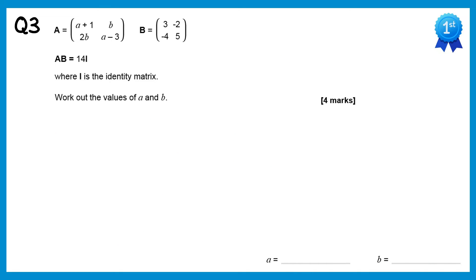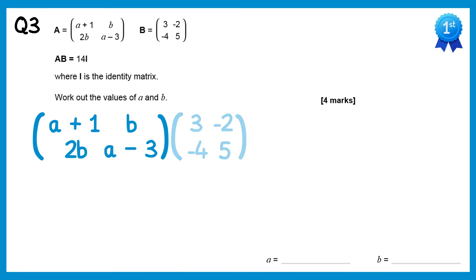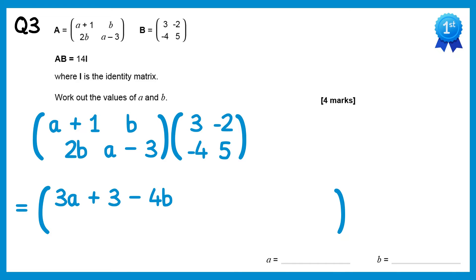In this question we're told that AB equals 14I. Let's work out AB. We'll do a plus 1, b and 3, negative 4: a plus 1 times 3 gives 3a plus 3, and b times negative 4 is negative 4b, so we've got 3a plus 3, take 4b. Then a plus 1, b with negative 2, 5: a plus 1 times negative 2 is negative 2a subtract 2, and 5 times b is 5b, giving negative 2a subtract 2 plus 5b.